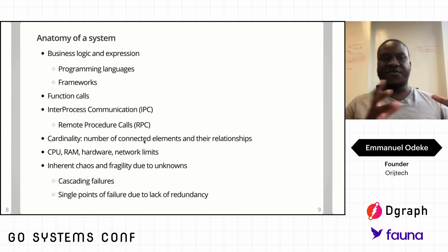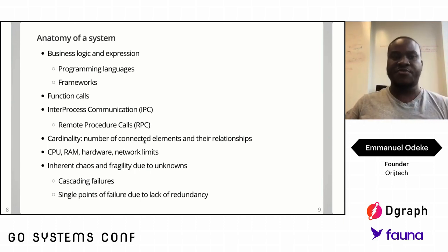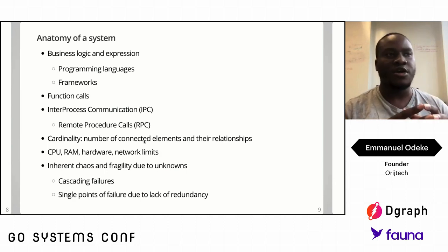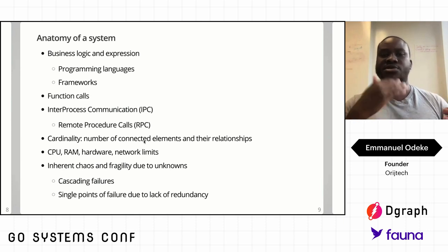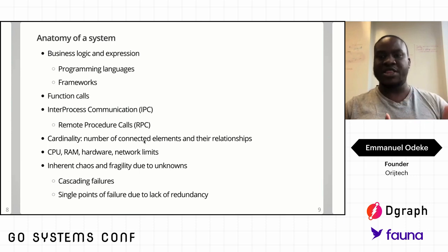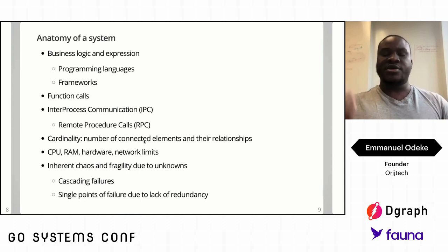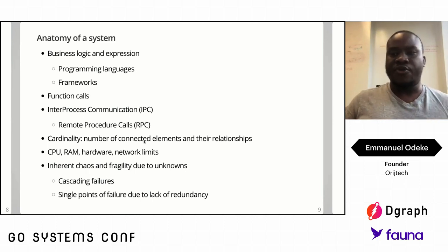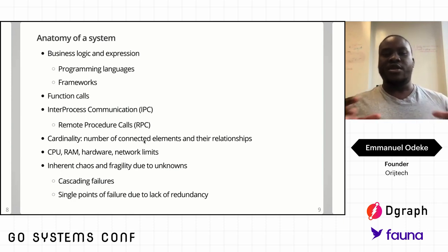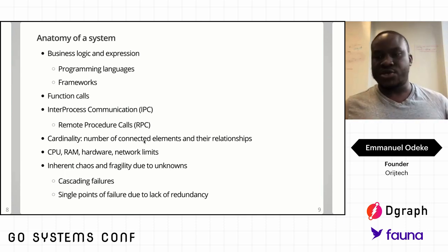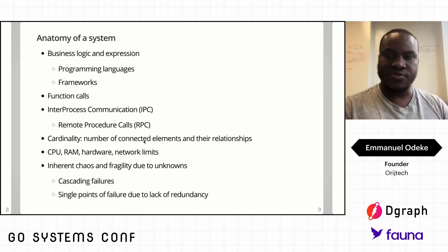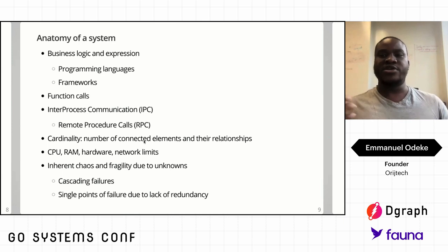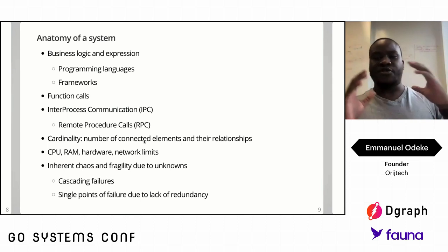After that brief introduction, let's get down to details — the anatomy of a system. Pretty much all programs that businesses run are meant to execute some sort of business plan. The software written executes the business logic or expresses ideas. Programming languages help you write expressions that get executed in a computer. There are frameworks. In order for code to work, function calls — functions need to talk to each other. When you go from one service that talks to another, we get to inter-process communication, IPC, and those calls are called remote procedure calls, RPCs.